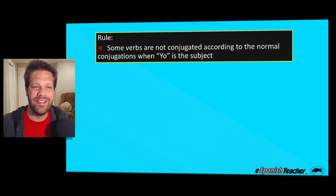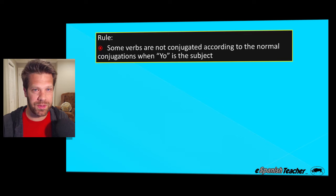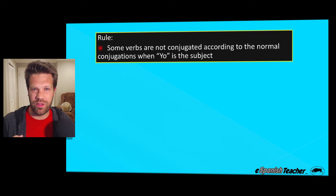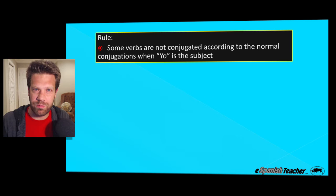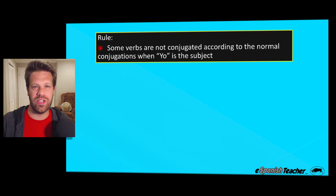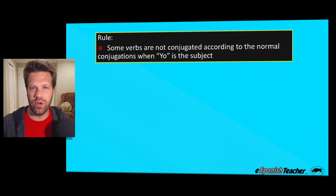Here's the rule: some verbs are not conjugated according to the normal conjugations when "yo" is the subject. We're just talking present tense verbs. The rule is that some present tense verb conjugations are irregular — spelled differently — when yo is the subject. We're not talking about tú, él, ella, usted, nosotros, or vosotros; just when yo is our subject.